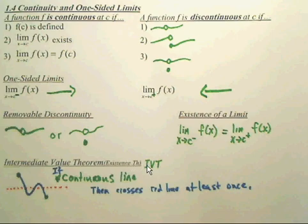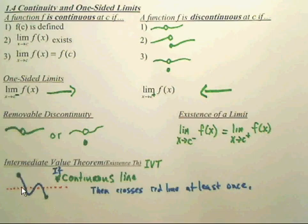The Intermediate Value Theorem: if you have two points on a continuous interval, you can guarantee that to get from one point to the other, you will cross any horizontal value between them. You must cross it at least once, though you can cross more than once.